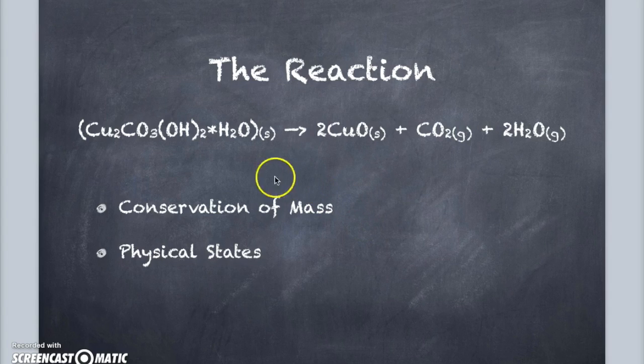At the beginning of the experiment, the hydrate added to the crucible was green, but after heating, a new black solid was formed. This new solid is copper oxide, as noted in the equation.